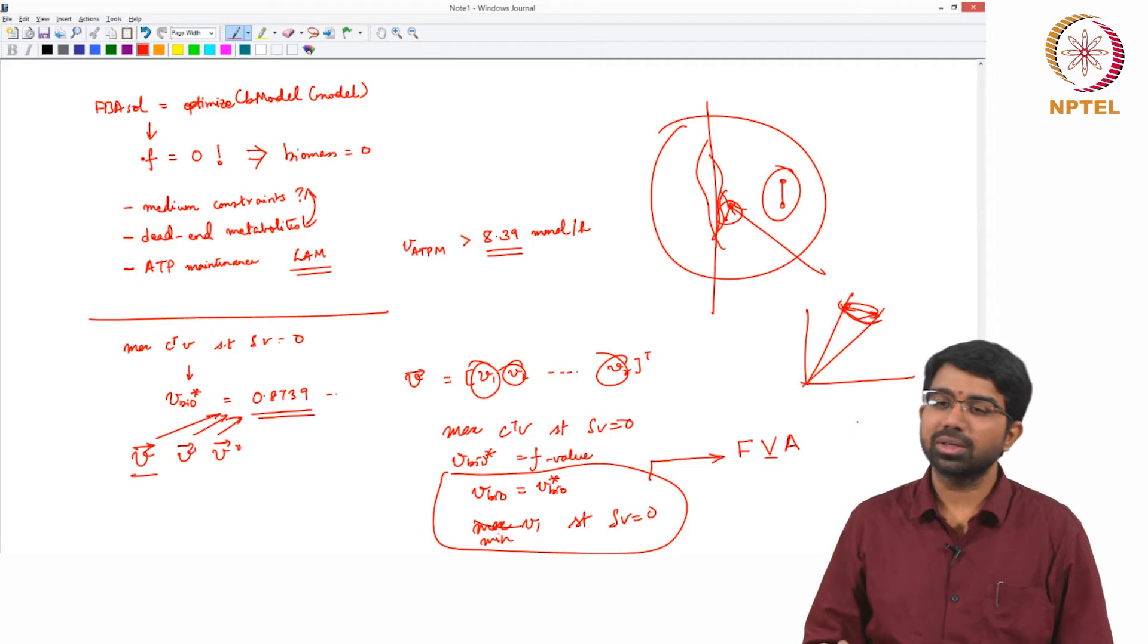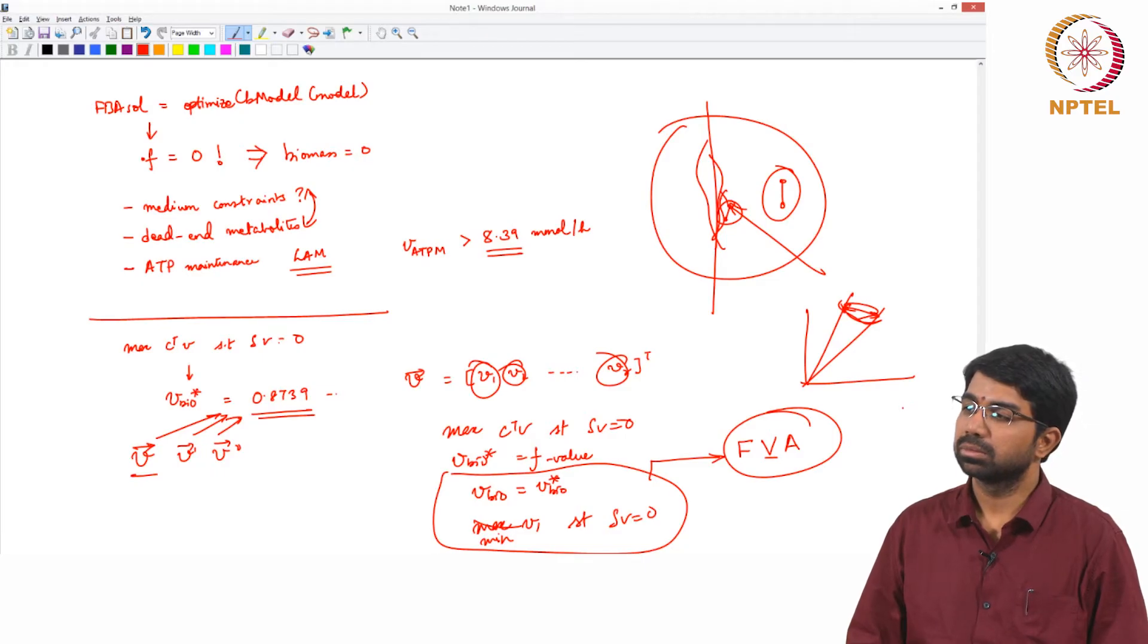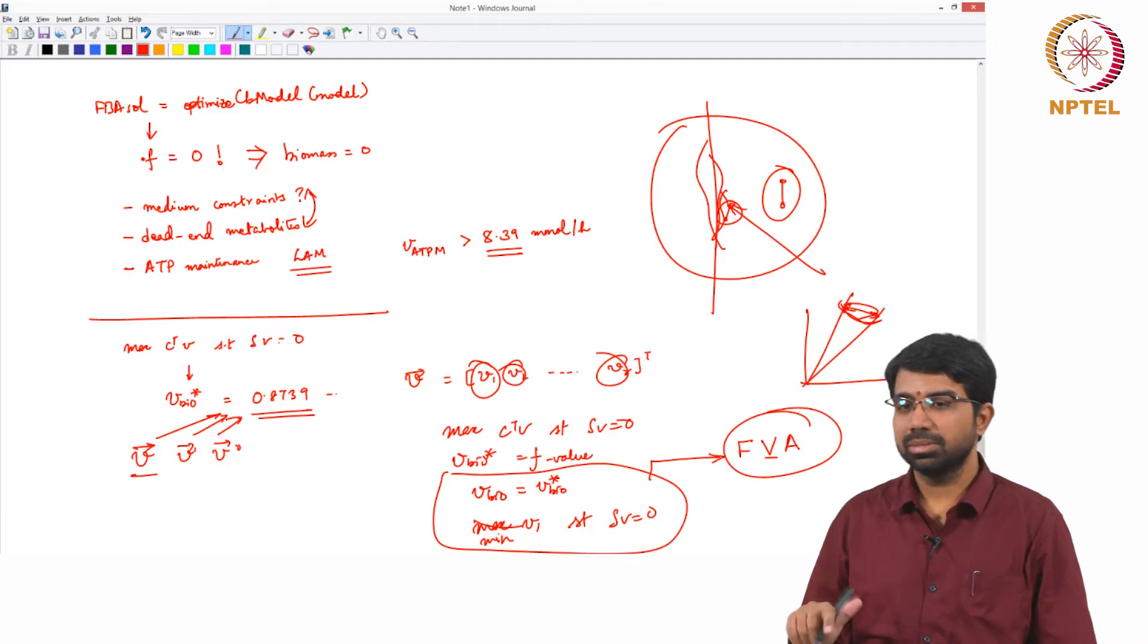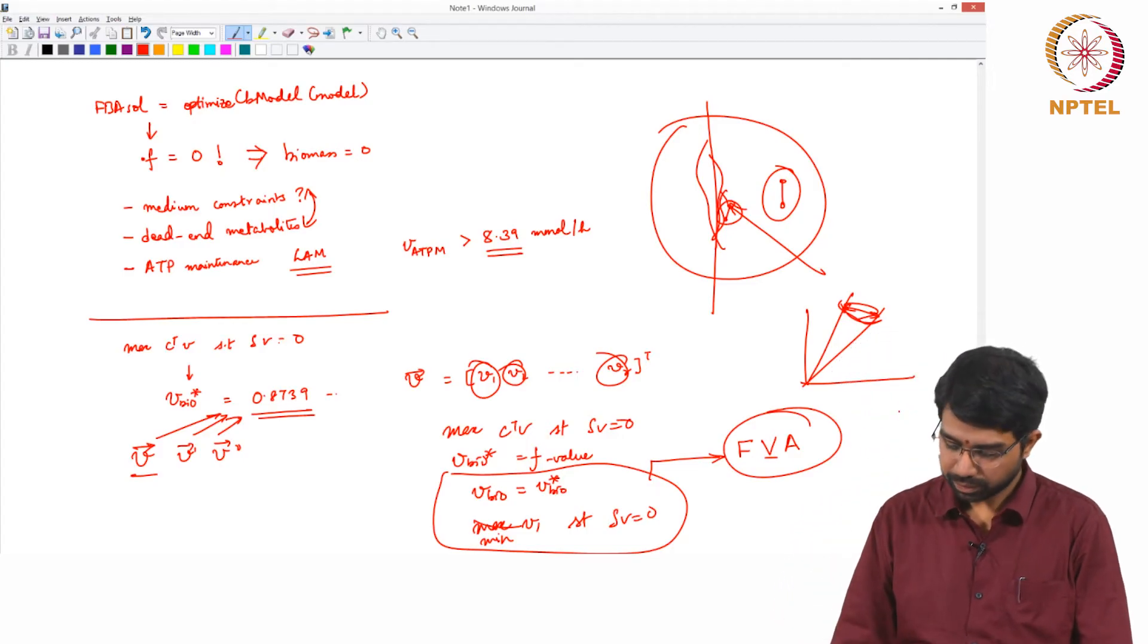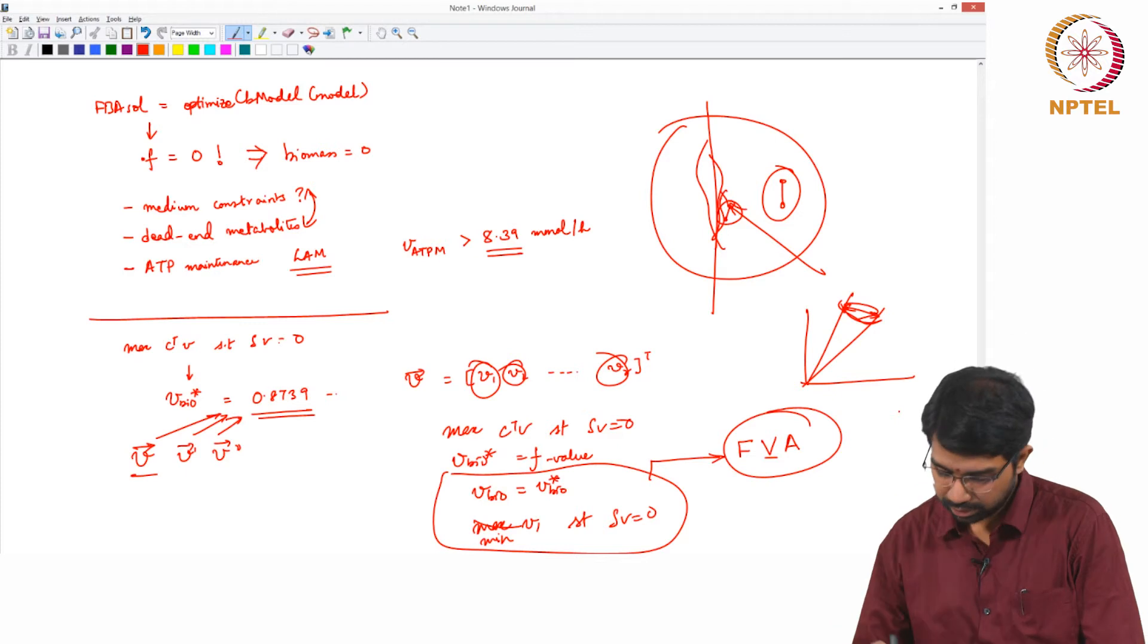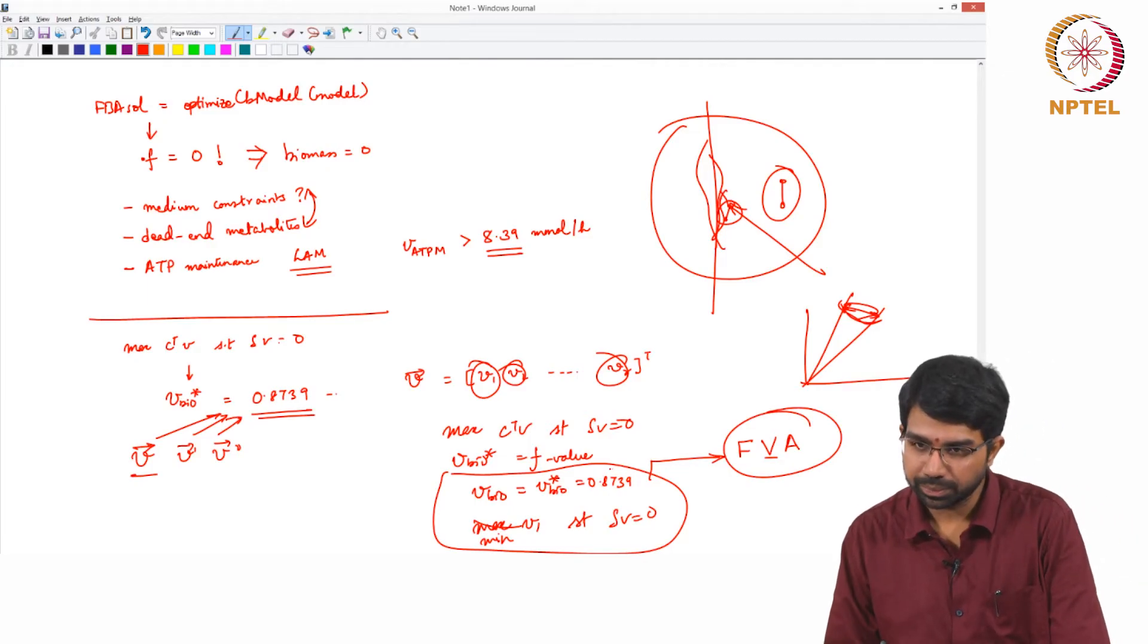So what is the blocked reaction in light of FVA? It is the bound is 0, the maximum value is 0. Max and min are both 0. So that is the blocked reaction, very simple way to define it. So V_bio star is 0.8739. Correct. You want to maximize C transpose V. We have already maximized C transpose V to get this. So C will be having only one value, only one place and everything will be 0.